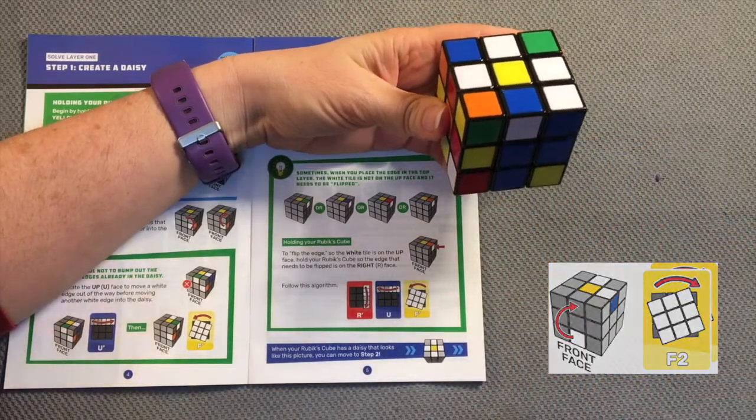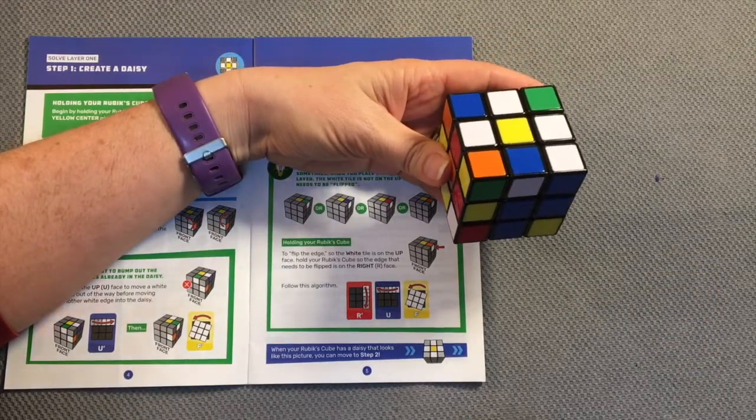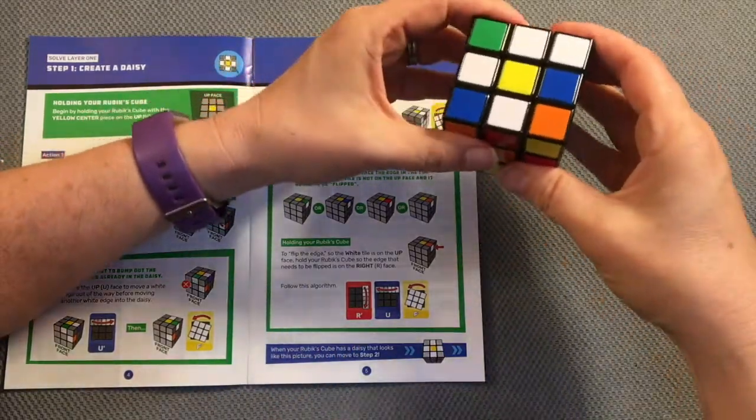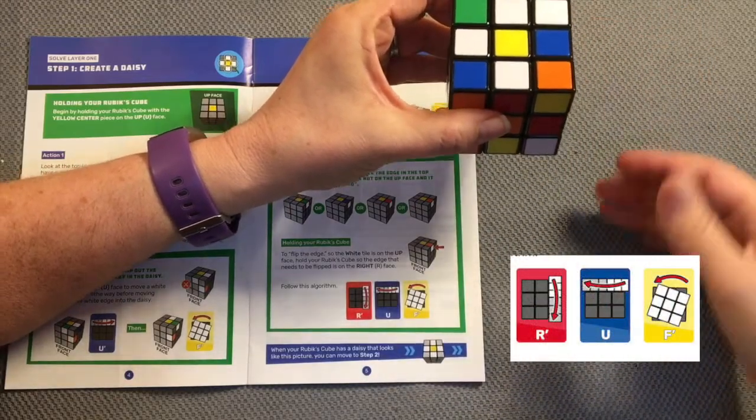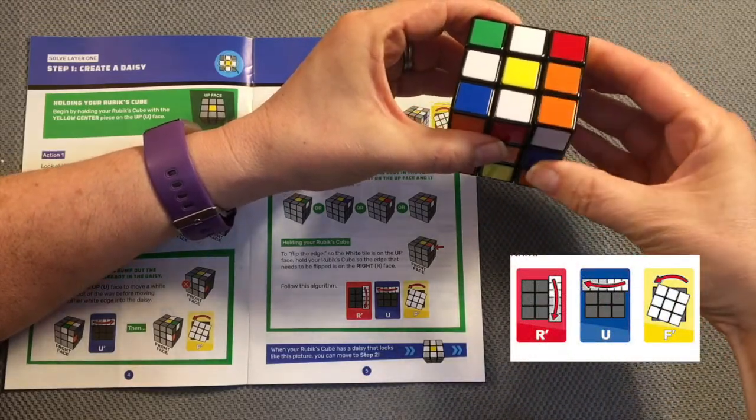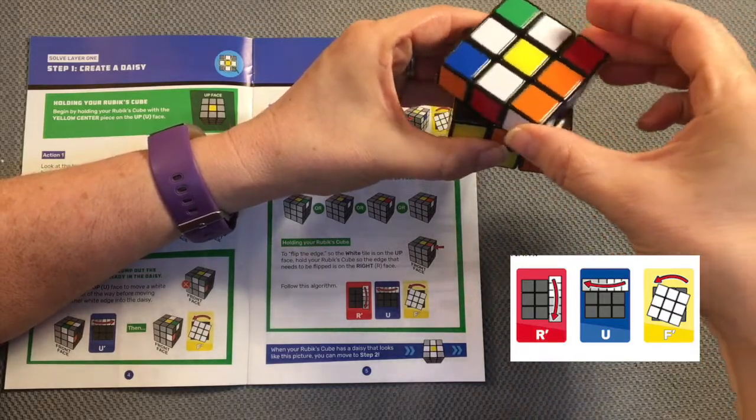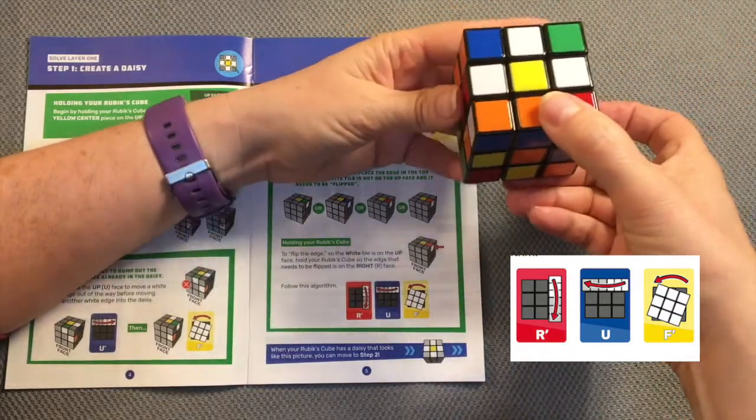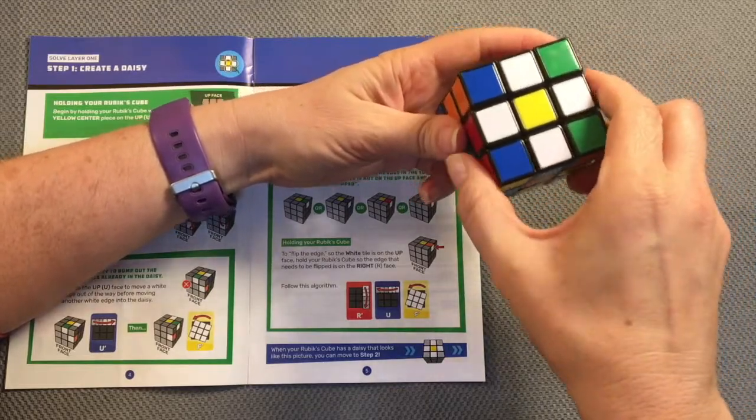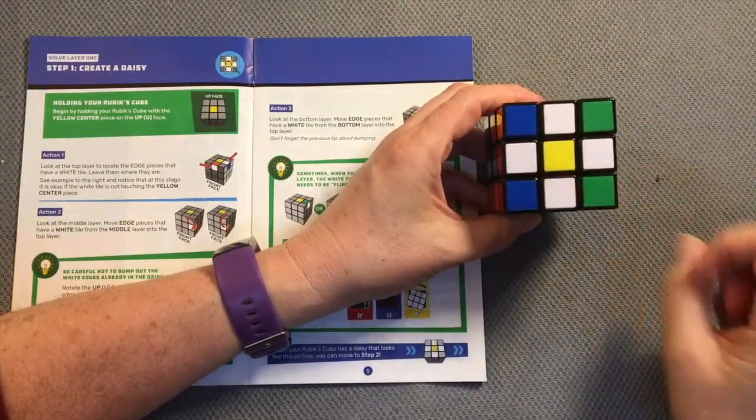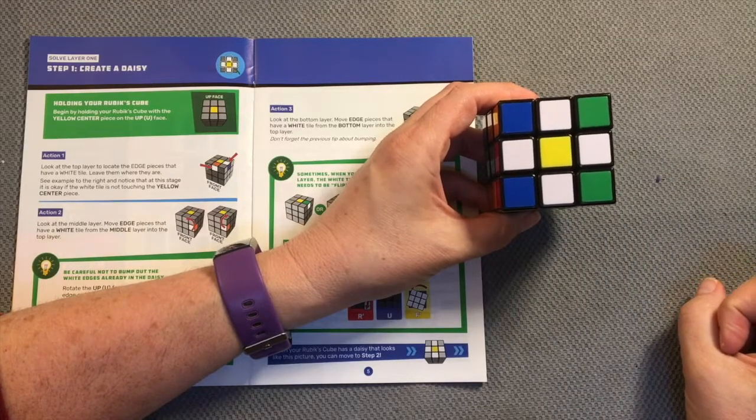Here I have more practice at flipping that tile. I know I need to come back to this algorithm. It needs to be on my right face: right towards me, up face away because I don't want to change the orientation there, and front face to the left. Now I have my daisy design and I'm ready to move to step two.